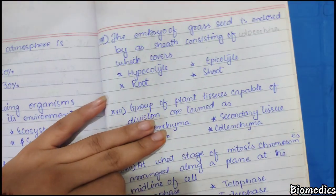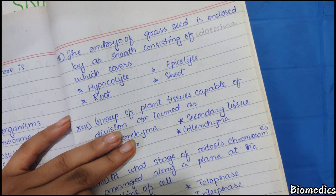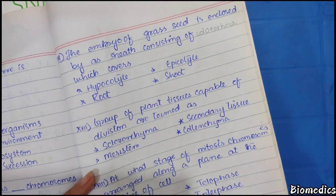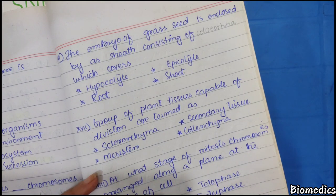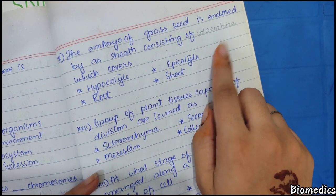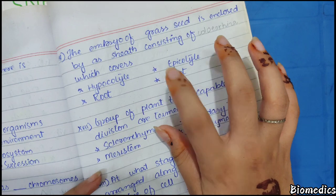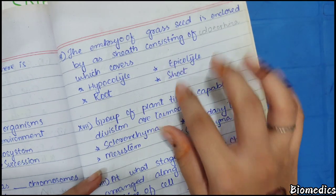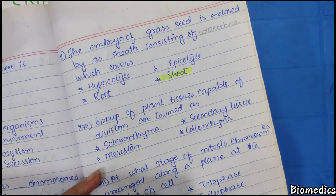The embryo of a grass seed is enclosed by a sheath called coleoptile, which covers the shoot. So the answer is that the covering is the shoot (coleoptile).